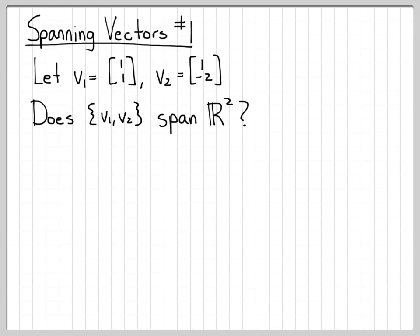We're asking ourselves, does this set of vectors, the collection of both these vectors, span the space R²? What does it mean for something to span R²? That means that we should be able to write any arbitrary element of R². Here I'm picking an arbitrary element from R², just this generic vector [a,b].